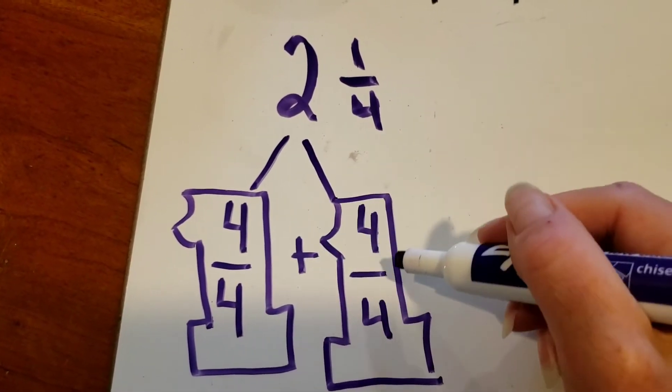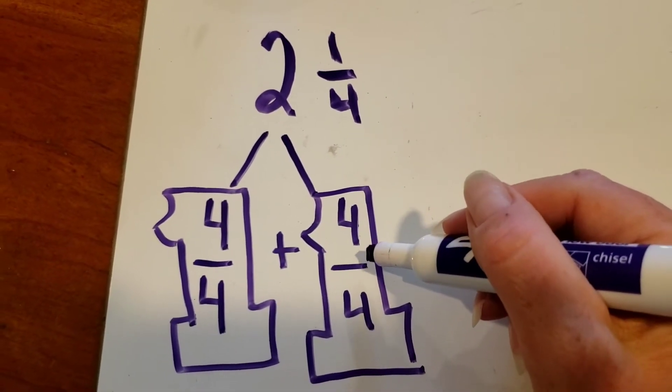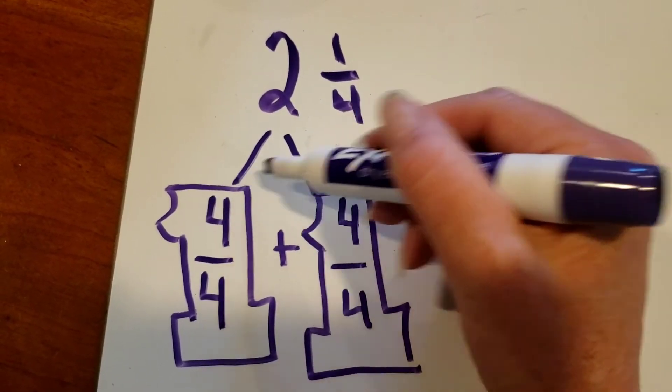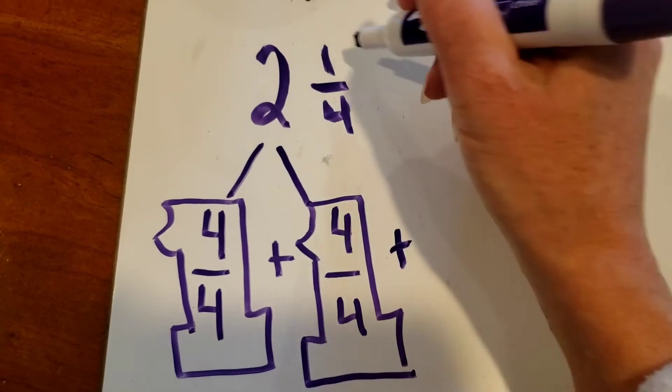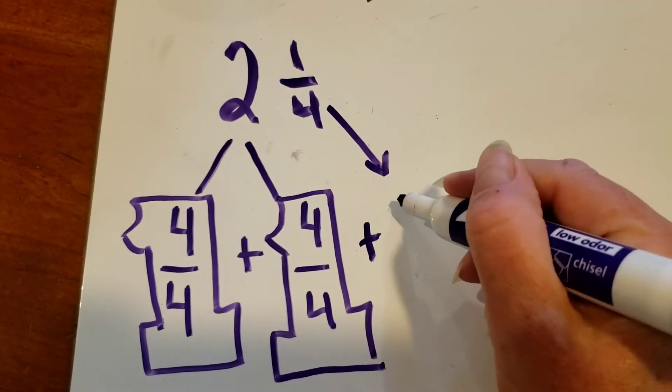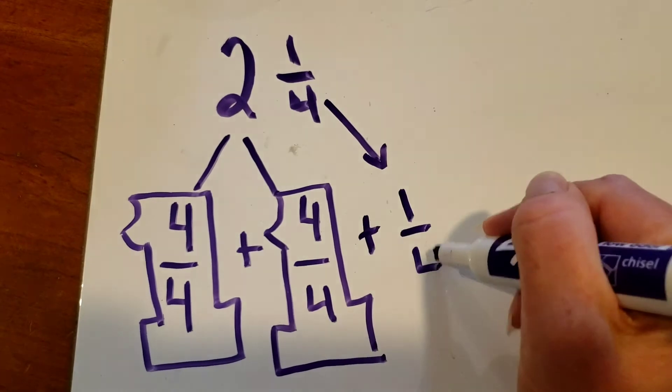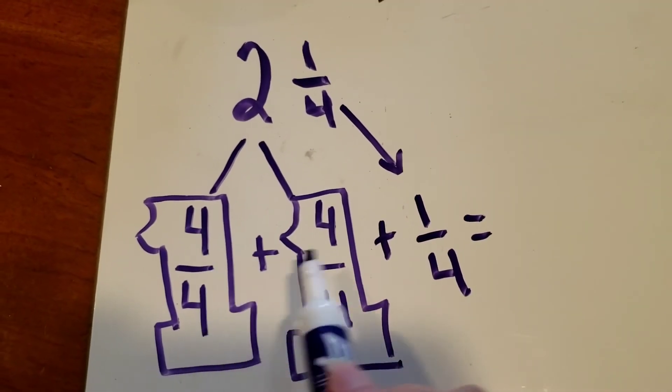So four fourths plus four fourths is the same as two, because one plus one is two. Then we're going to take this fraction here and bring it down and add it to these two fractions.